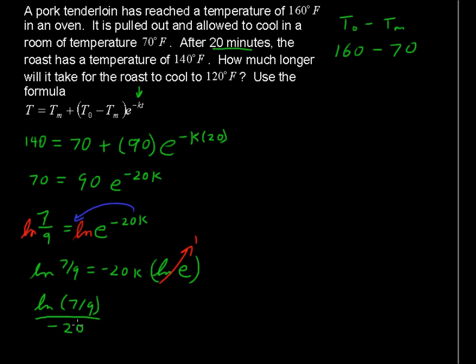And I specifically put that 7 over 9 in parentheses, because if you're going to plug all of this in into your calculator at once, make sure you use those parentheses. That equals K.